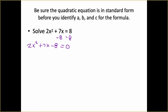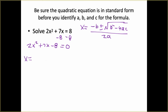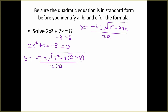We can now use the quadratic formula: x equals negative b plus or minus the square root of b squared minus 4ac, all over 2a. We plug in our numbers: the opposite of b, plus or minus the square root of 7 squared minus 4 times a times c. Inside the radical we get 49, and the other part is 64; when you add them together, you get 113, all over 4.